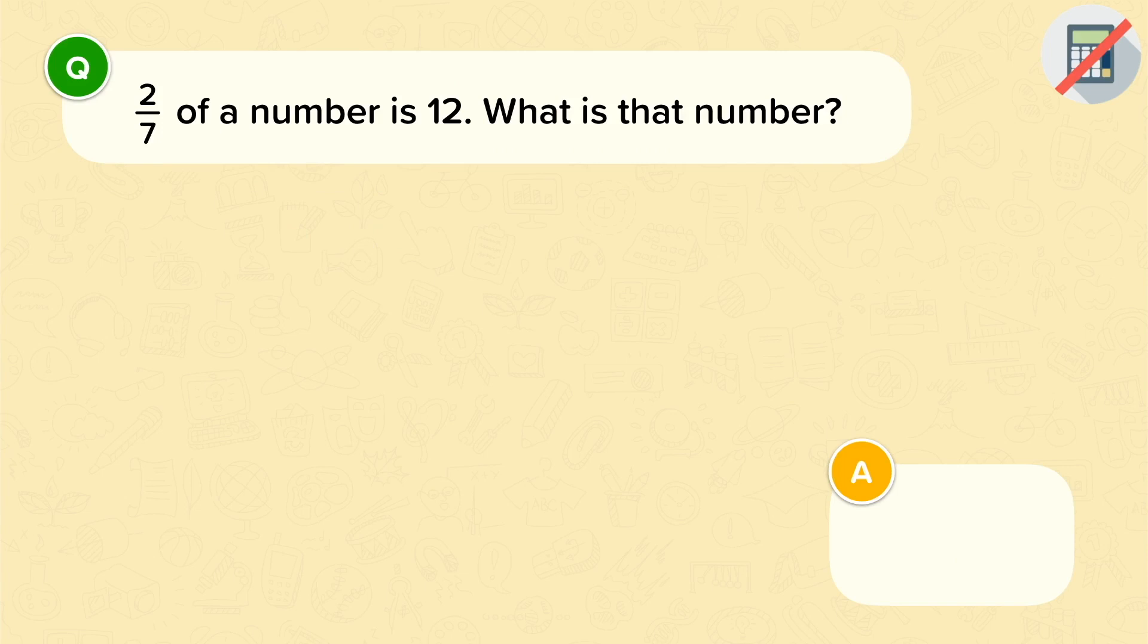So now we're told that 2 sevenths of a number is 12, and we want to find out what that number was. So this is a reverse fractions question, because the number is unknown, and a fraction of that number has been found, and we need to figure out what the original number was.